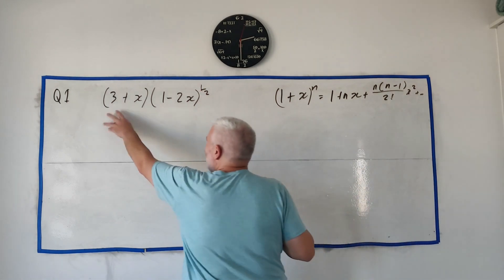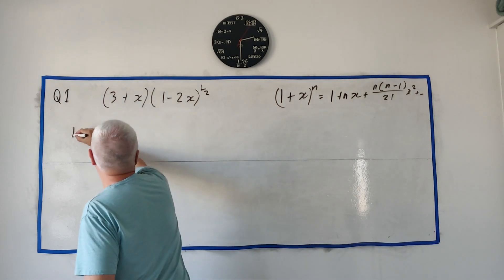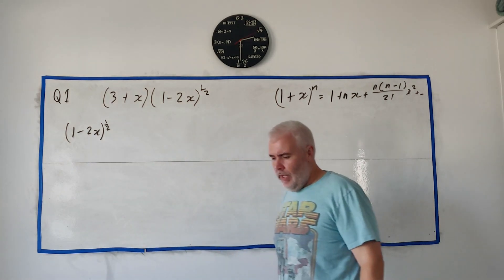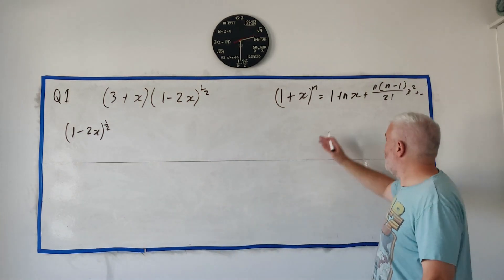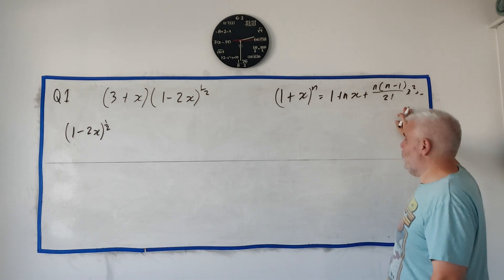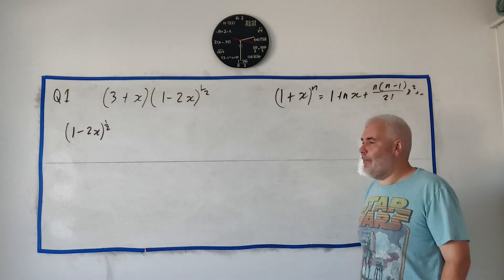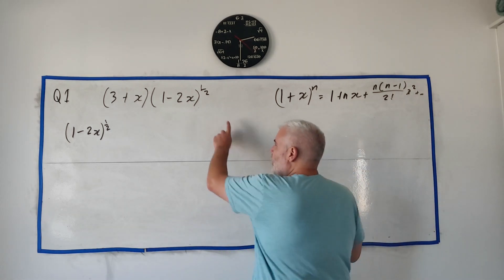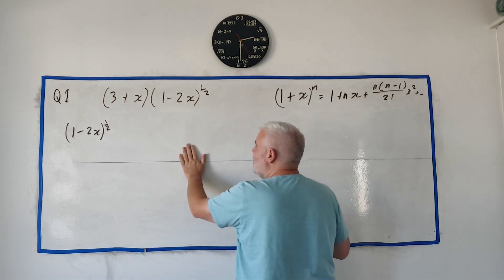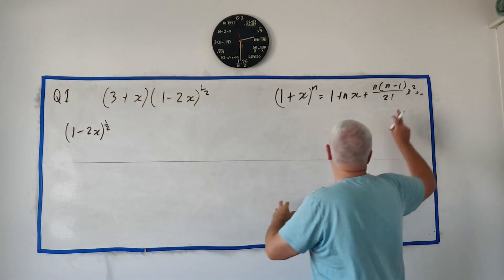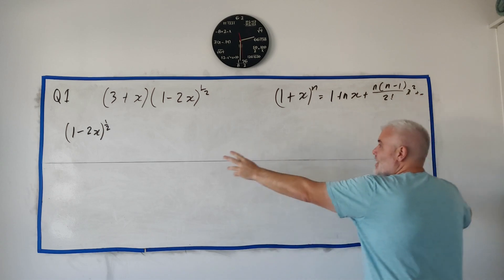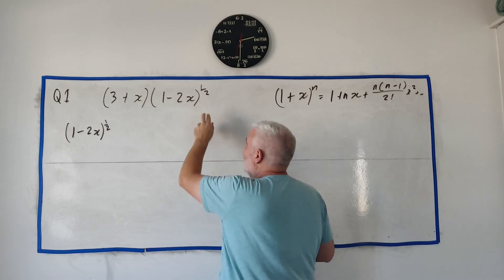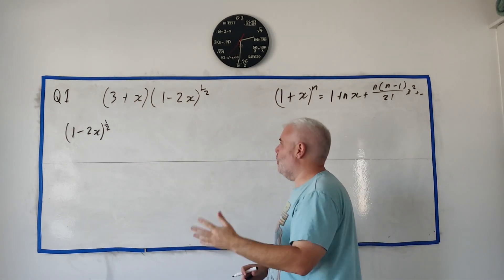So let's ignore the first part of this question. Let's just expand this guy out here. 1 minus 2x to the power of a half using this formula. Let's think ahead a bit, though, how much of it we want to use because, well, I've wrote actually just the right amount here. They want us to go as far as x squared, but remember we are going to end up multiplying by this here. So let's see. Will I ever need an x cubed from this expansion? No, an x cubed times a number would be an x cubed. Don't need it. An x cubed times an x would be an x to the power of 4. Don't need it.